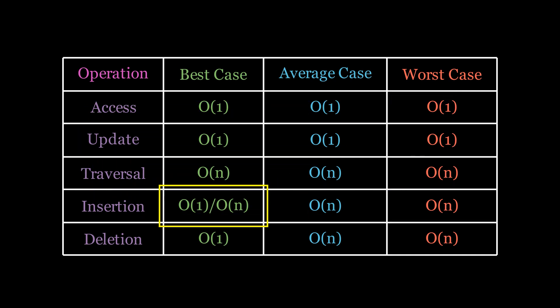Now, the best case for insertion occurs when adding an element at the end of the array, which generally takes constant time, except when resizing is needed. In such cases, the insertion will take linear time due to the resizing process. But resizing is infrequent, so the process generally takes constant time. For the average and worst cases, insertion will always take linear time complexity because of the need to shift elements to accommodate newer insertions.